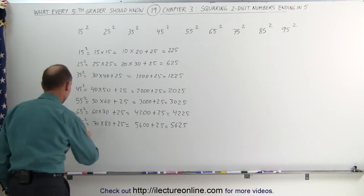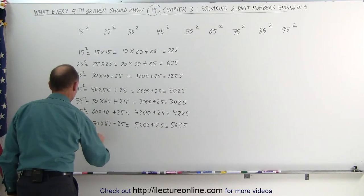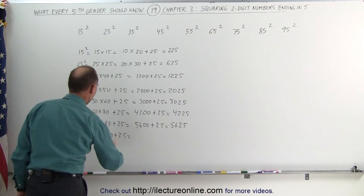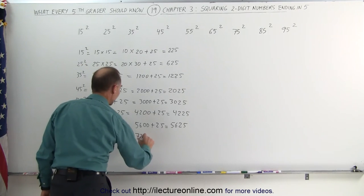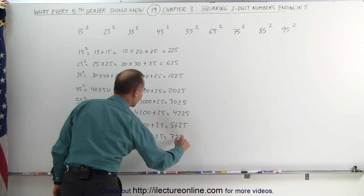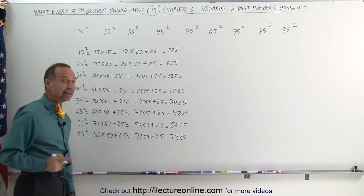How about 85 squared? 85 squared, that's the same as 80 times 90, add 25 to that. 8 times 9 is 72, plus 2 zeros, add 25, that's 7,225.